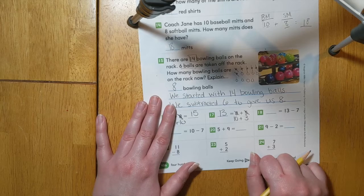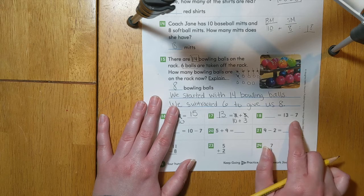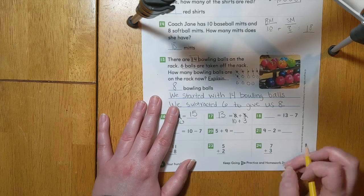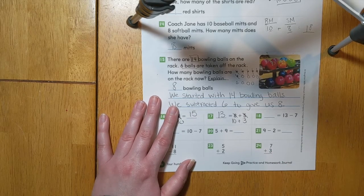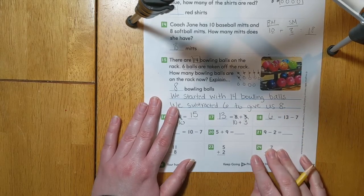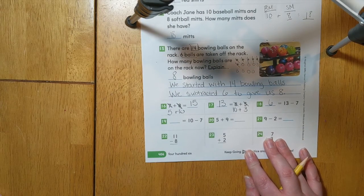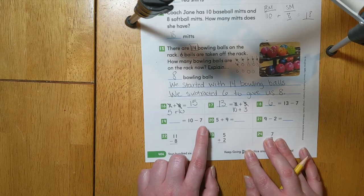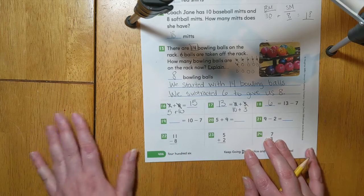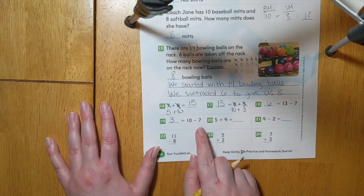We know that 10 plus 3 equals 13. So 13 equals 8 plus 5. Let's take a look at number 18. Remember our fact families. What number plus 7 equals 13? 6 plus 7 equals 13. So I know that 6 equals 13 minus 7. Let's look at number 19. I know that if I add 3 to the number 7, it will give me 10. So I can use my fact family knowledge and say that 3 equals 10 minus 7.